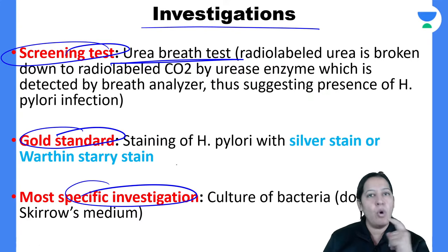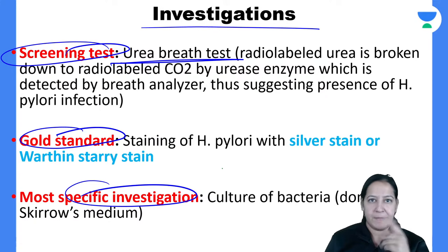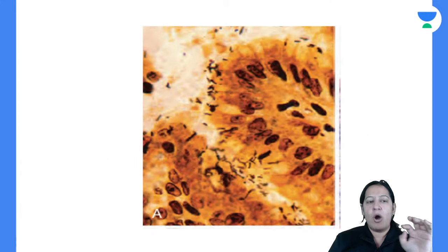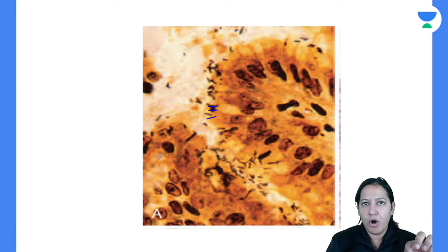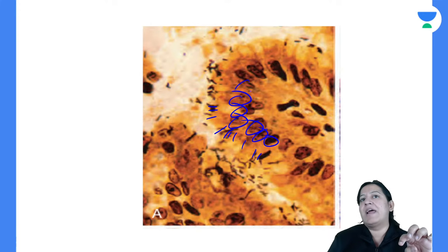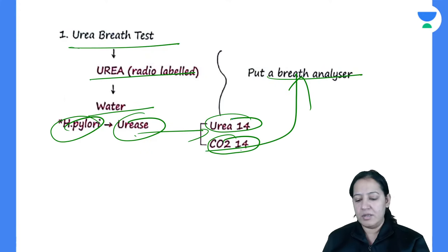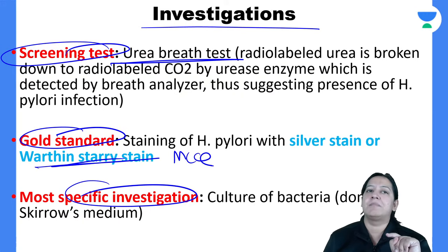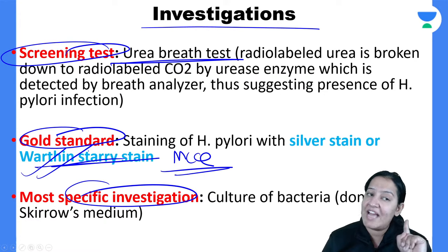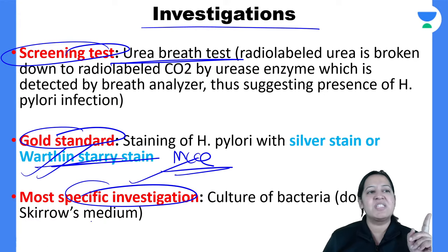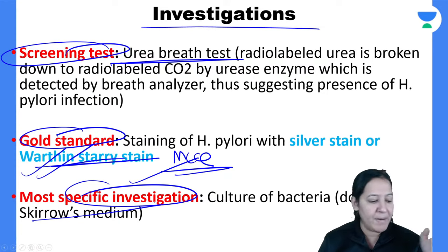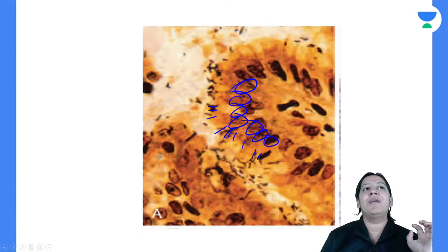The gold standard test is to take a biopsy. On the biopsy, H. pylori appears as small rod-shaped organisms outside the mucosal cells. The special stain for H. pylori is Warthin-Starry stain — a very important MCQ. The specific investigation is culture of H. pylori, which is done on Q medium.